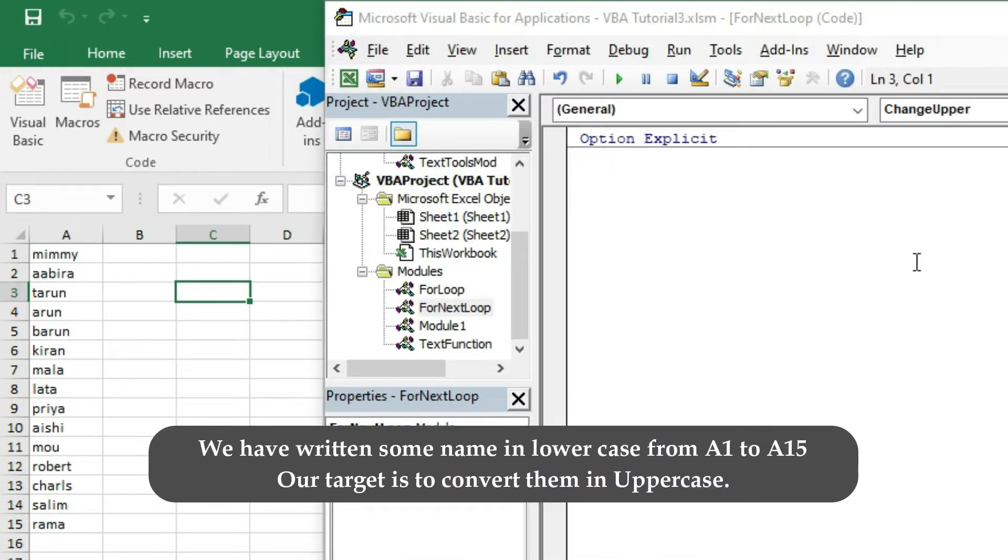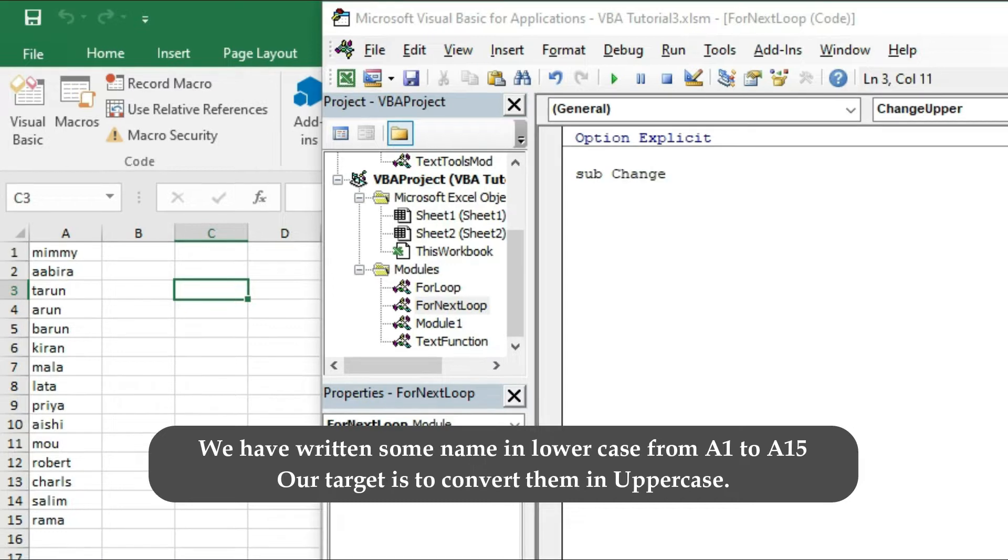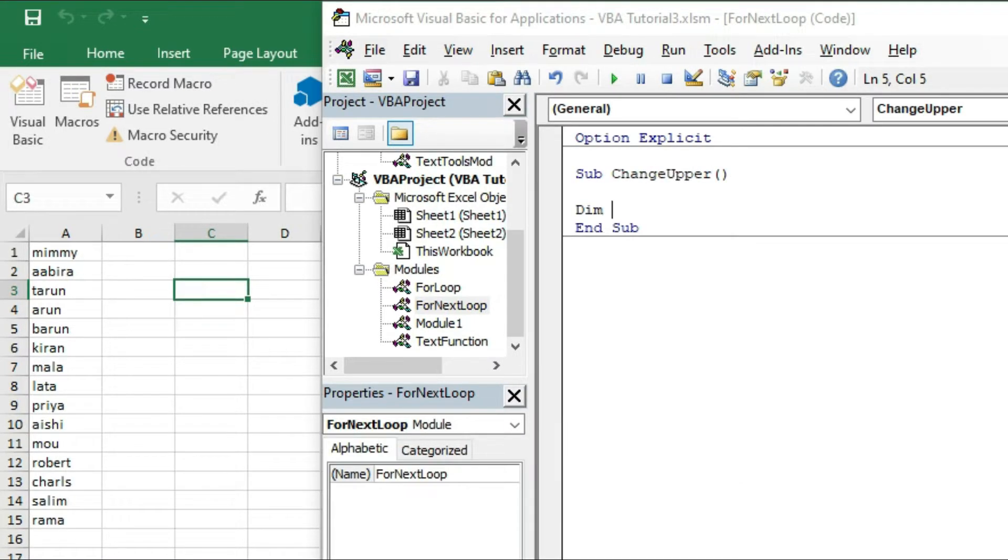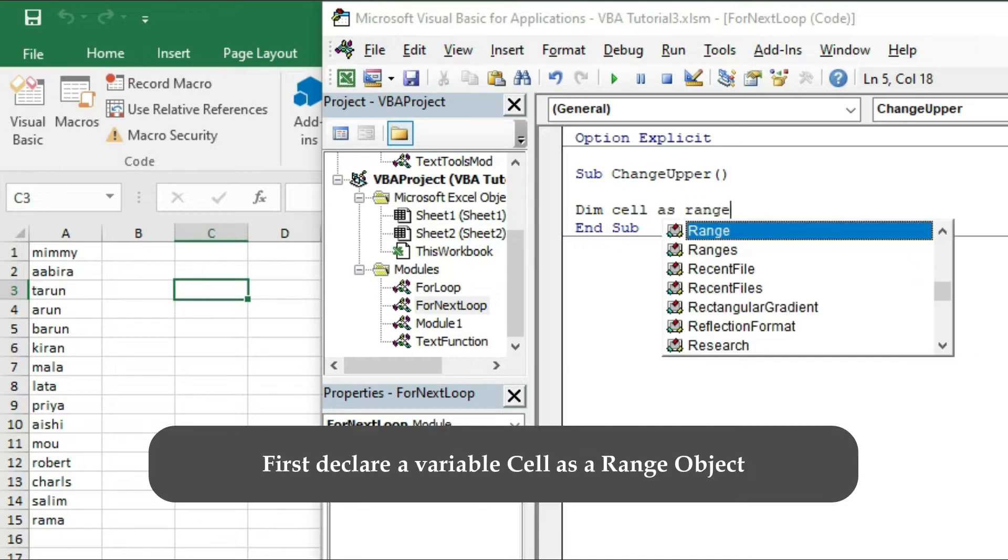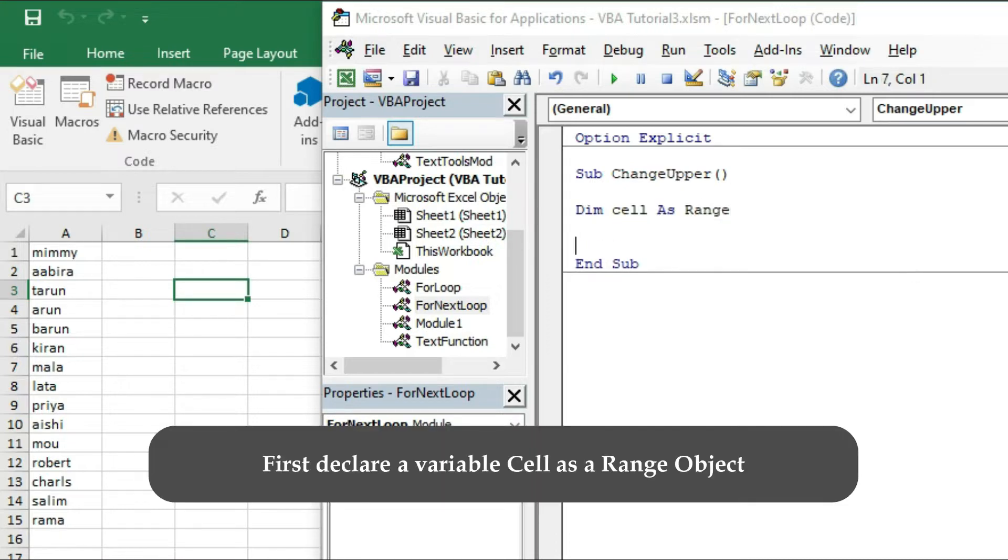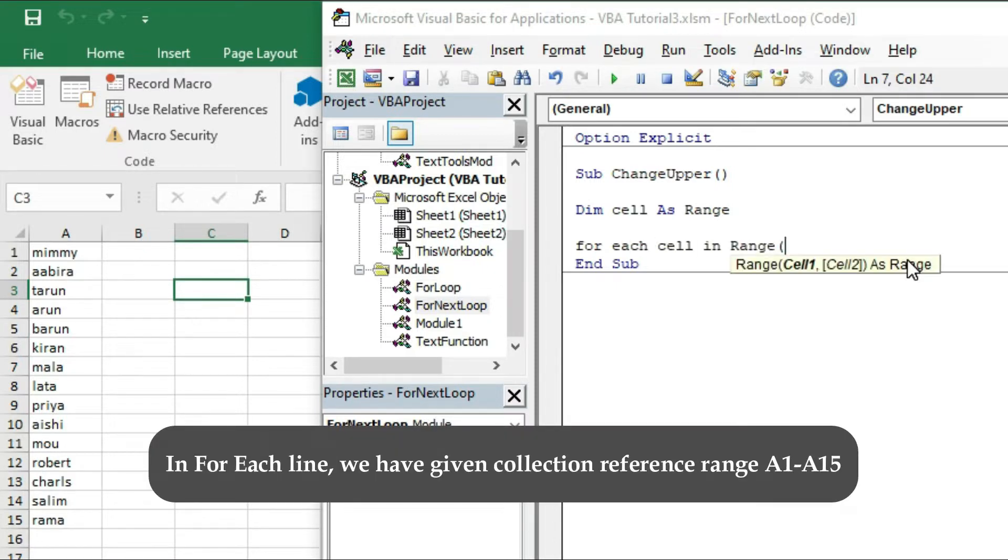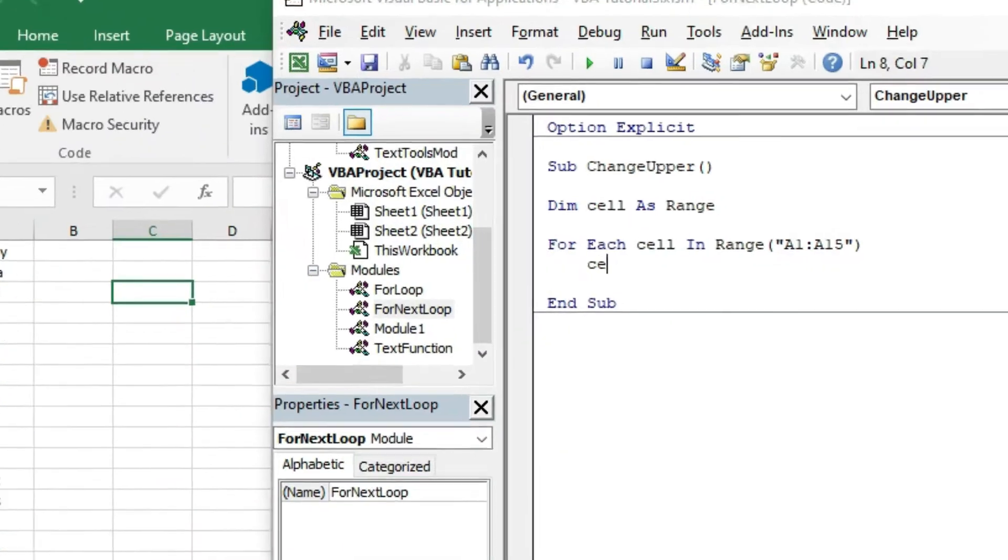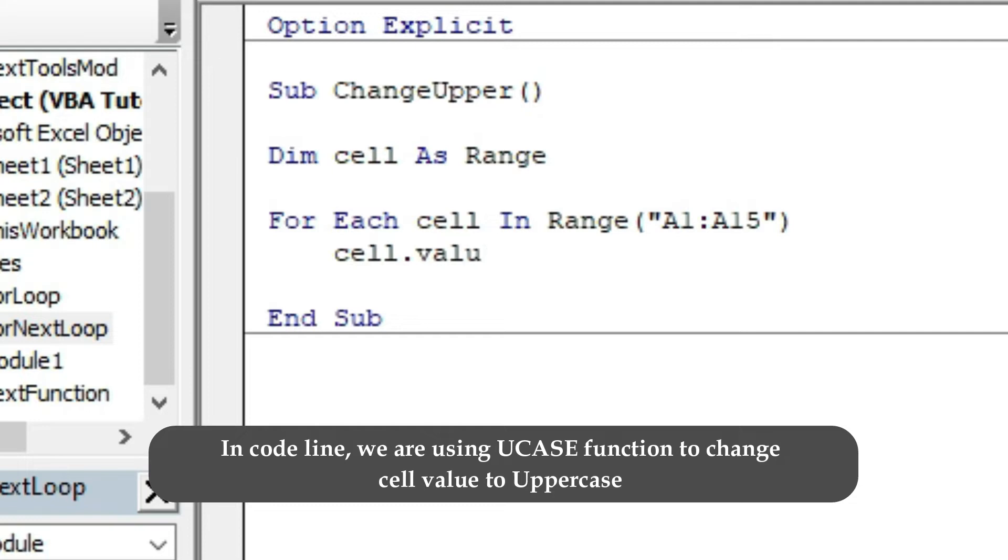We have written some names in lowercase from A1 to A15. Our target is to convert them to uppercase. First, declare a variable cell as range object. In For Each line, we have given collection reference as range A1 to A15. In code line, we are using UCASE function to change cell value to uppercase.